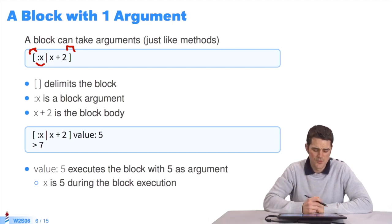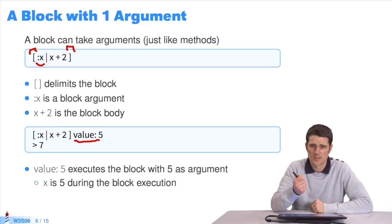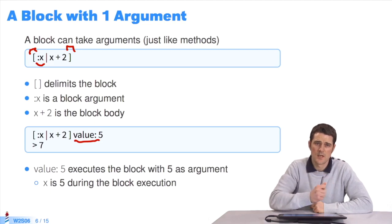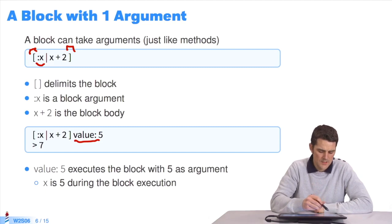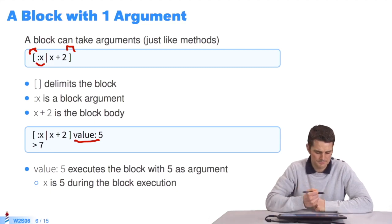If I send the message value to the block, you have to use a specific message value with a parameter. At the same time, you pass the value 5, which replaces the argument x when the expressions of the block are evaluated. If I send the message value 5 to this block, it returns 7 since the value of x is 5 when the block is evaluated.